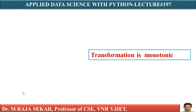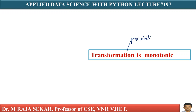Here, the transformation from probability to odds is a monotonic transformation. This means the odds increases as the probability increases, and vice versa.